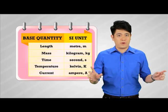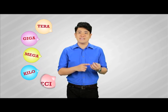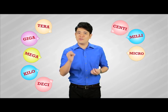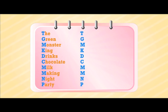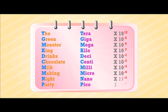Only five base quantities. And now for the prefixes — there are tera, giga, mega, kilo, desi, centi, mili, micro, nano, pico. That's a lot to remember, isn't it? It isn't difficult if you remember the following acrostic: The green monster king drinks chocolate milk, making night party. Not bad at all, huh?